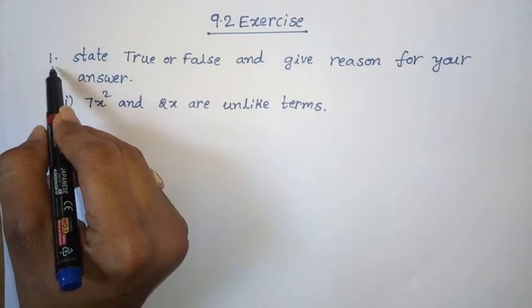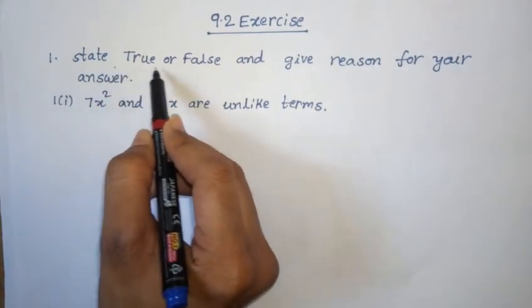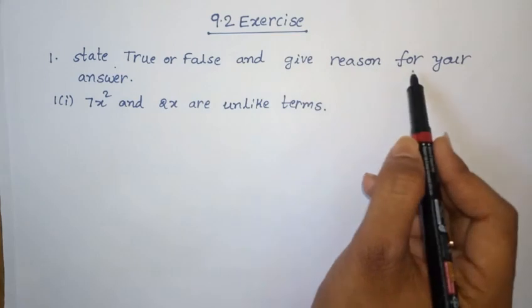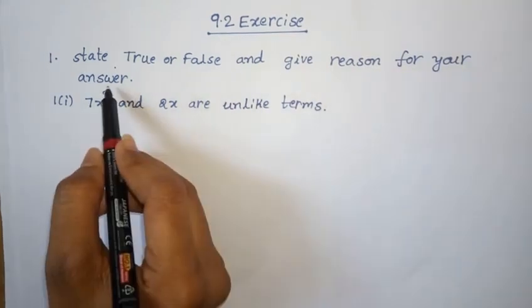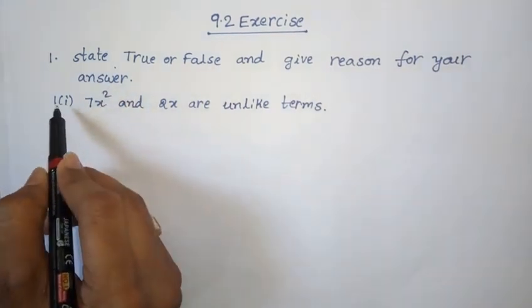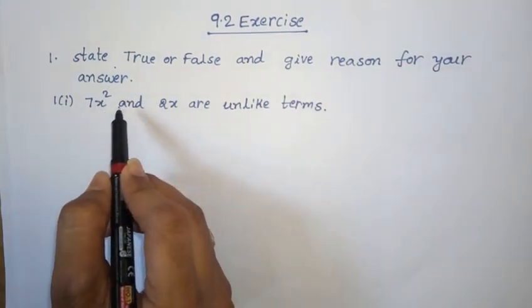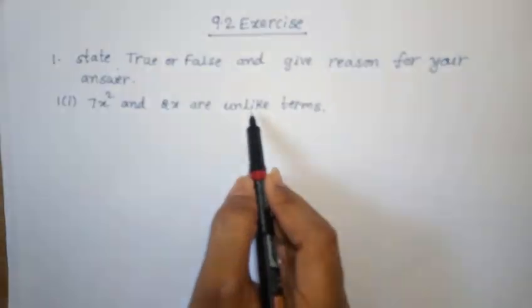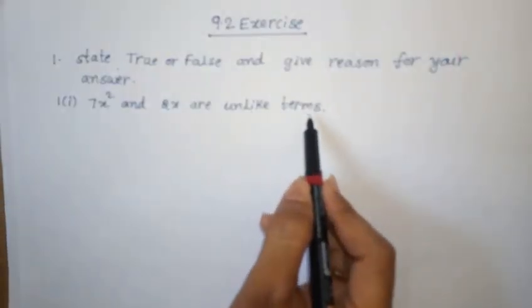1st Roman: state true or false and give reason for your answer. 1st one: 7x squared and 2x are unlike terms.